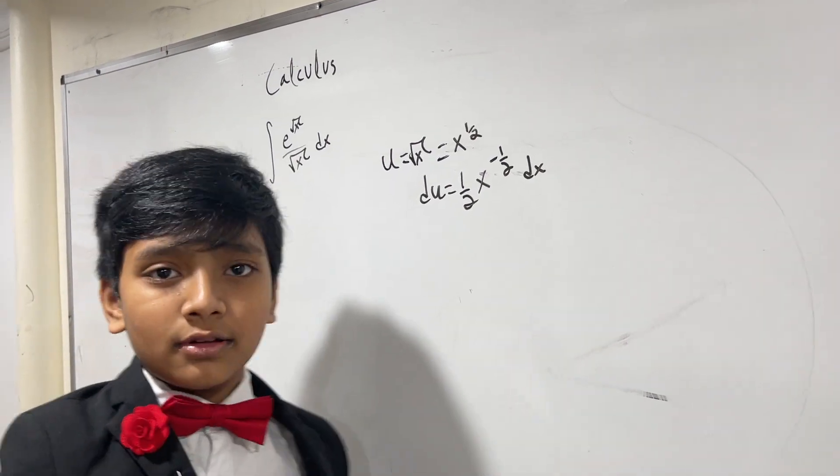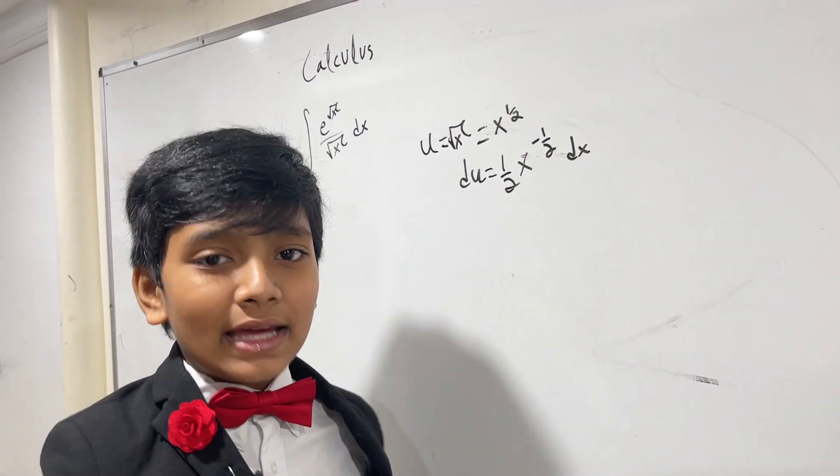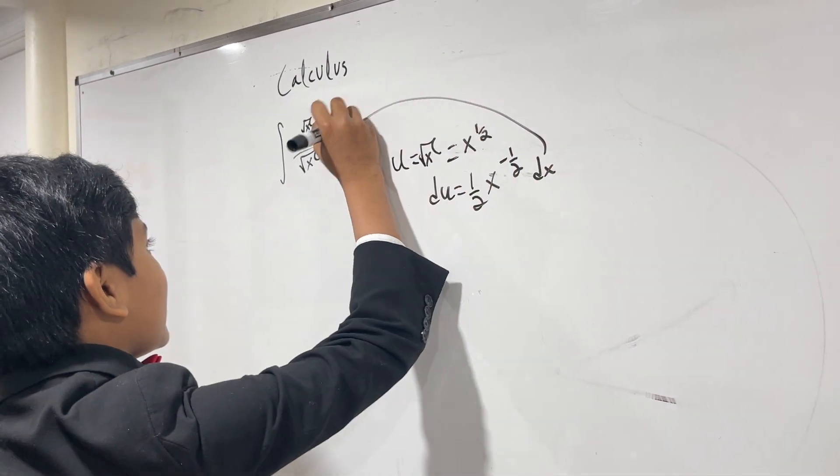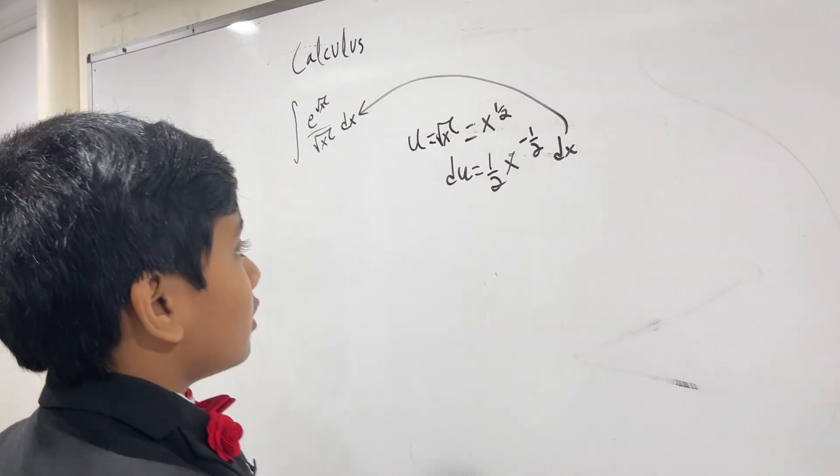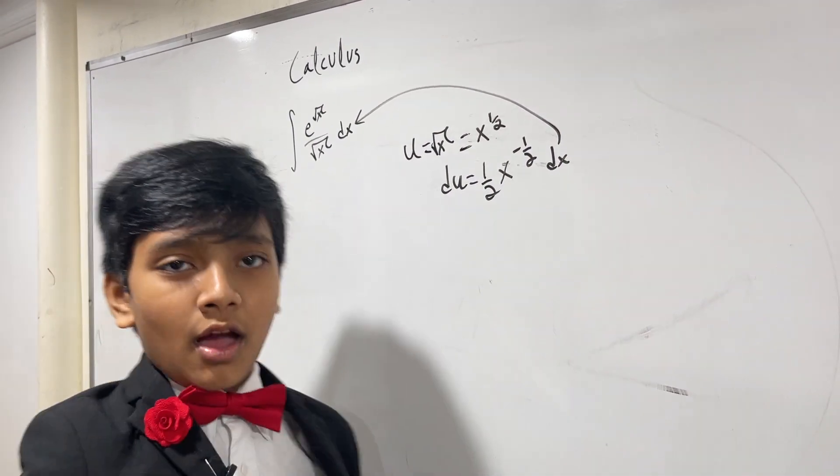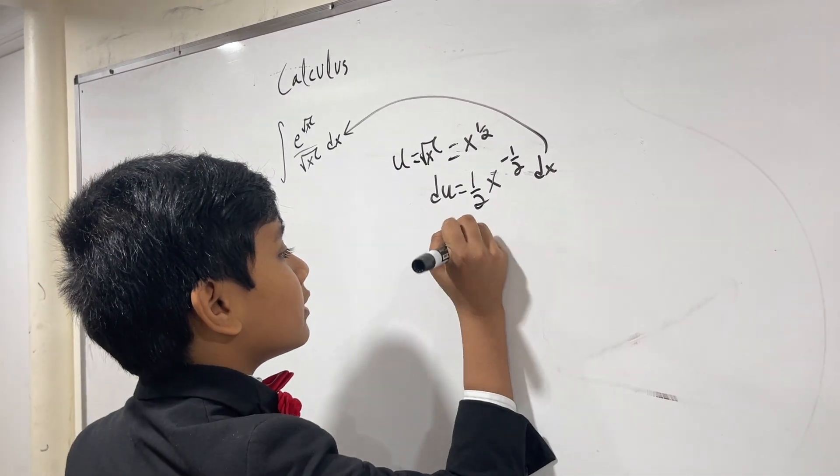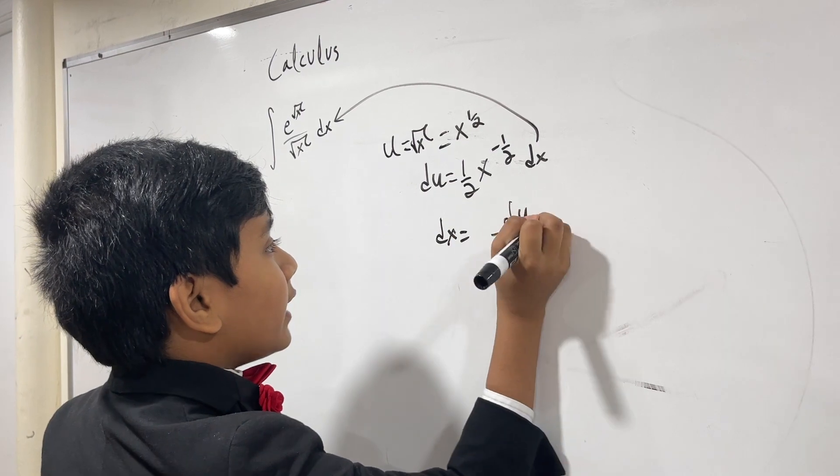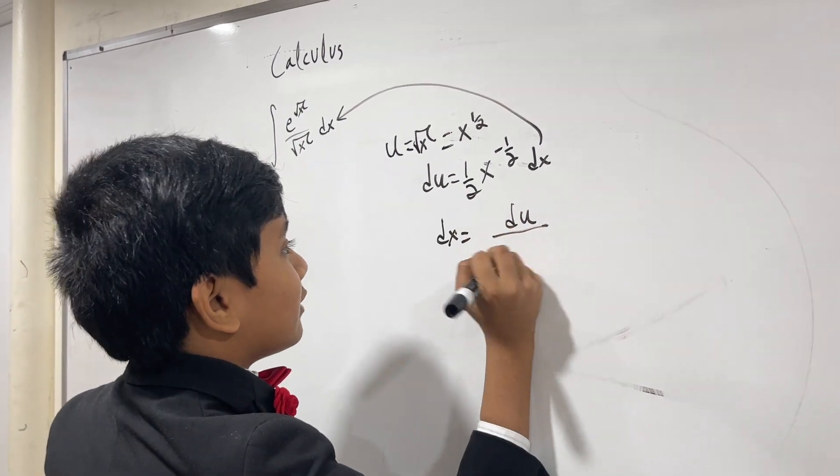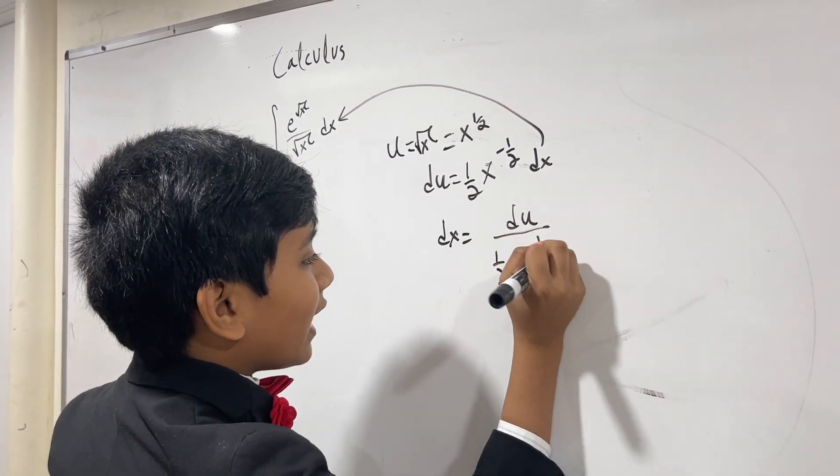All right. So, now, what do we do? Well, we want to plug in dx, because we want to plug in dx over here. So, what do we do? Well, what we do is... You don't let your student talk in the classroom? We divide over here, and I guess this is one half x to the minus one half, but the thing is,